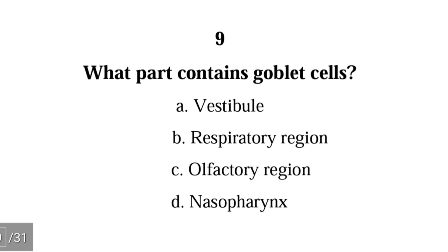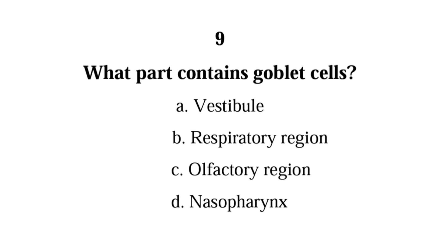Number 9. What part contains goblet cells? A. vestibule, B. respiratory region, C. olfactory region, D. nasopharynx. The correct answer is B, respiratory region. Goblet cells are found in the respiratory region of the nasal cavity.